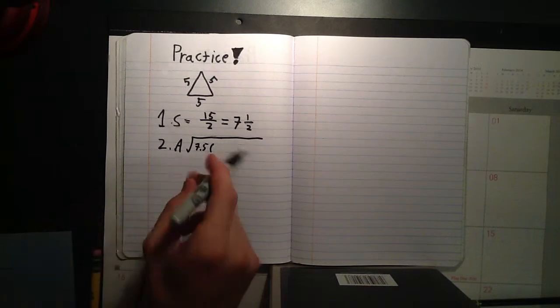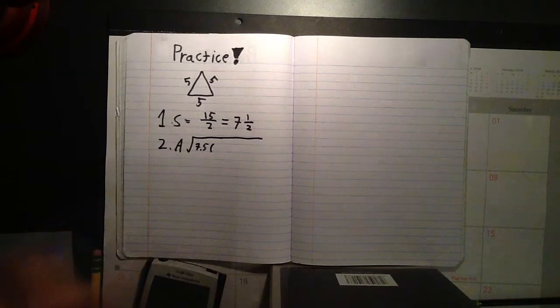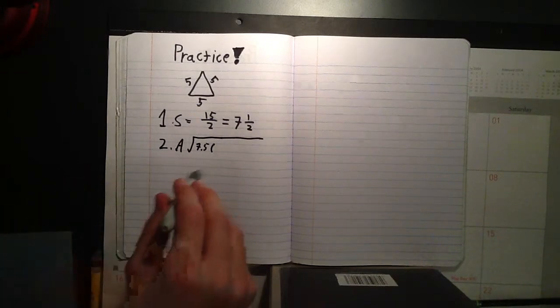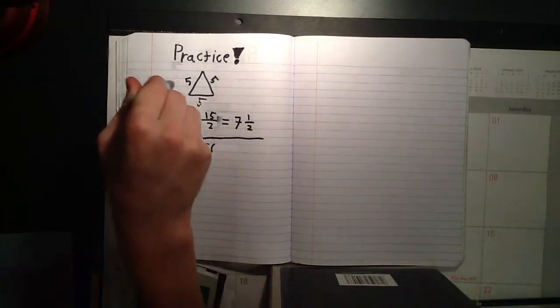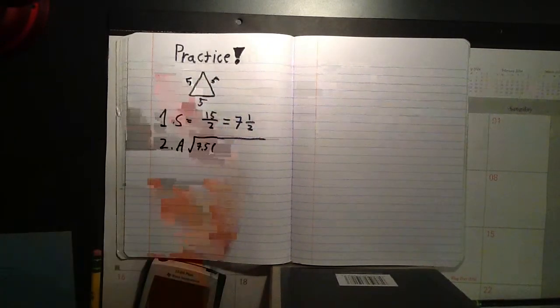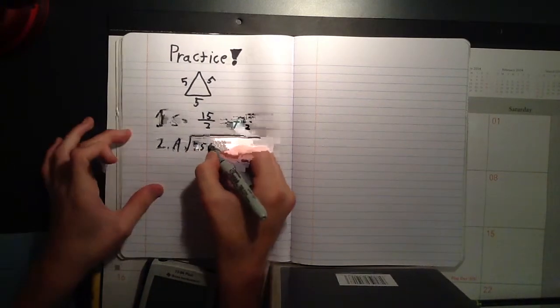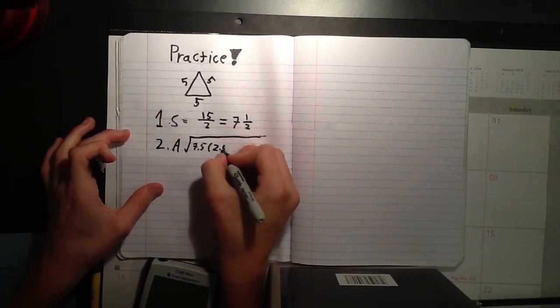Since, in our formula, we have s minus a times s minus b times s minus c. Since that's all the same, since all of these are the same, how about we just put this in cubed? So, 7.5 minus 5 is 2.5. So, we'll do times 2.5 cubed.